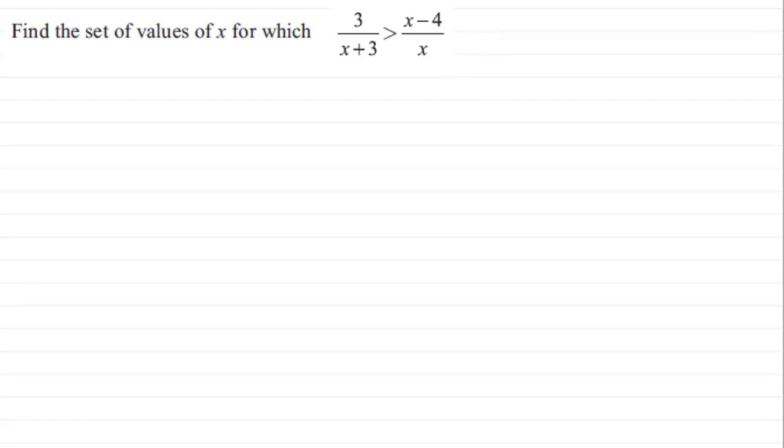Now I did say that to handle something like this we can't multiply by x and x plus 3 to both sides. What we can do though is multiply both sides by a positive value and that would mean the inequality doesn't reverse. So if we take our two fractions, 3 over x plus 3 and x minus 4 over x, what would that positive value be? Well, we want to remove the x plus 3 and the x, so why don't we square both these values and we've got ourselves a positive value.